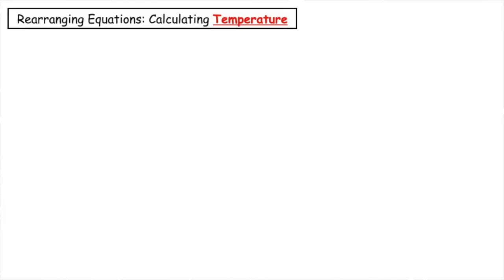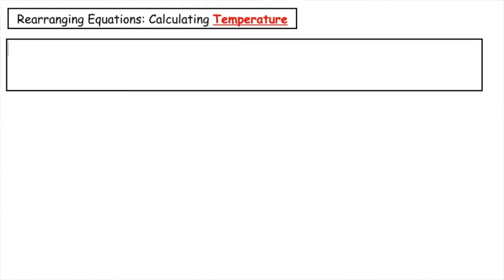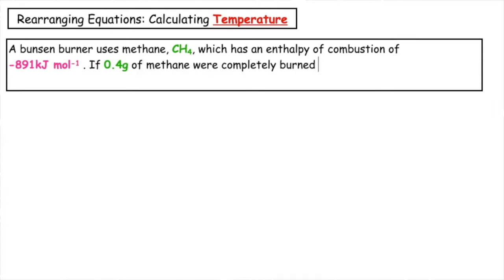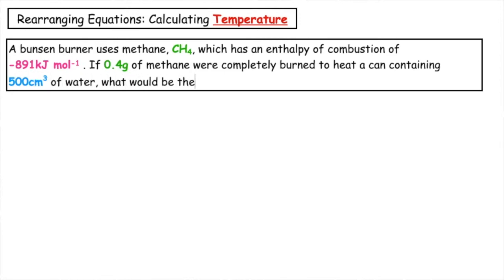In this first example, we're going to be looking at rearranging the equations to calculate temperature. A Bunsen burner uses methane, CH4, which has an enthalpy of combustion of negative 891 kilojoules per mole. If 0.4 grams of methane were completely burned to heat a can containing 500 centimetres cubed of water, what would be the maximum temperature rise which would be produced?